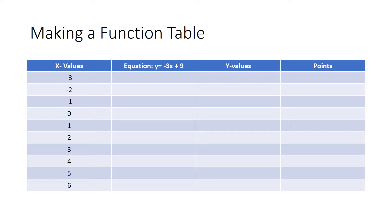Down the left-hand x value column you list the ten values that you have chosen to use. Remember, you have to use negative two, negative one, zero, and one. You can choose any other number to fill in the remaining six places. For my example I've chosen to use negative three, two, three, four, five, and six.